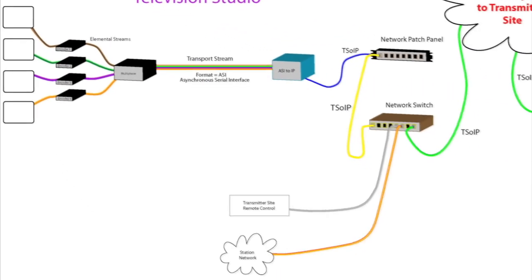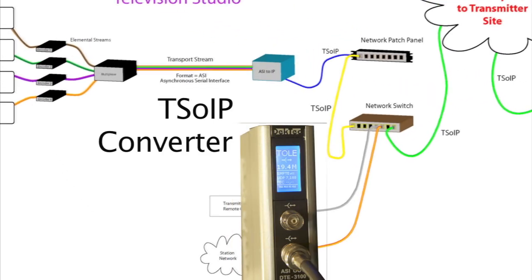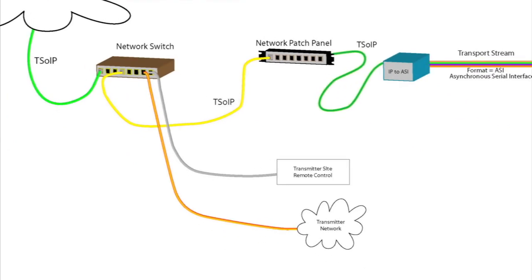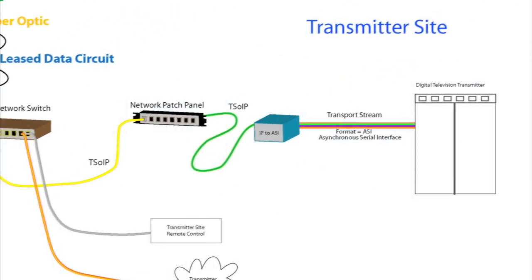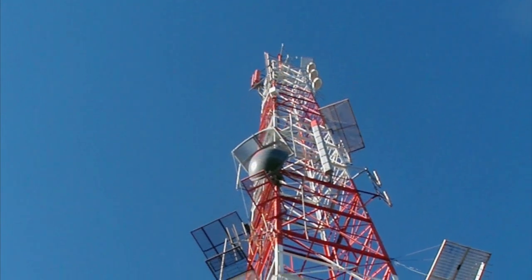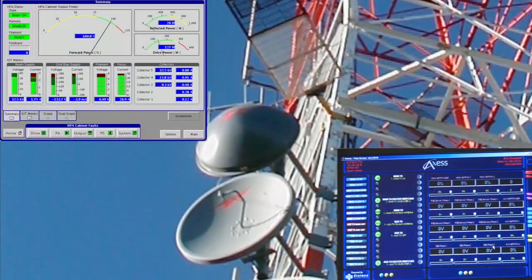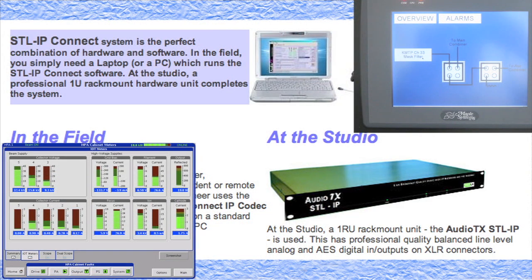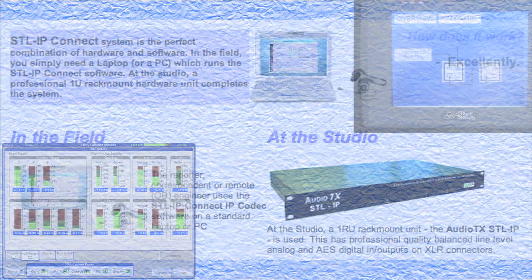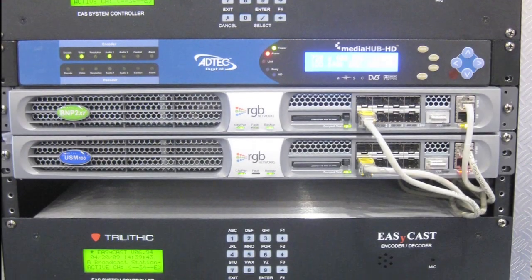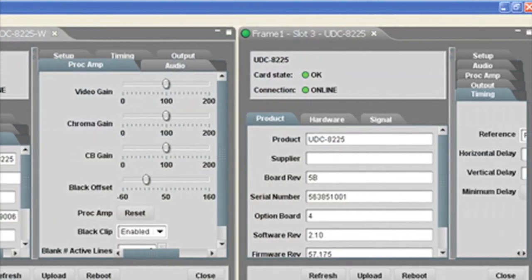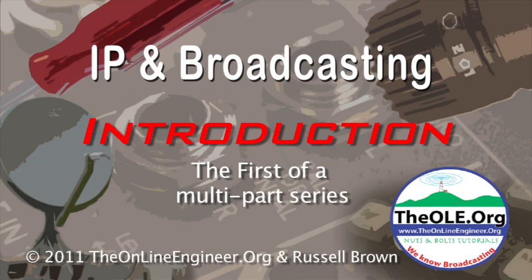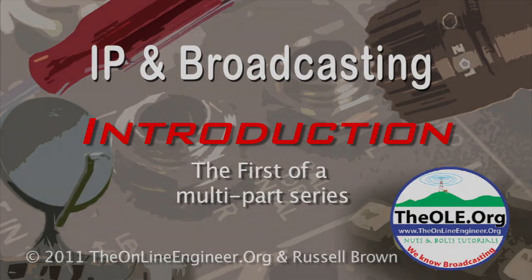Once video and audio are encoded into an ASI stream, it can be converted into a TSO-IP, or Transport Stream Over IP, for transport over IP networks. Many stations now have internet access at their transmitter sites, and this has led to many transmitter remote control systems having IP interconnectivity for control and monitoring. As you can see, IP is widely used in broadcasting, and it will only become more important as we move forward.